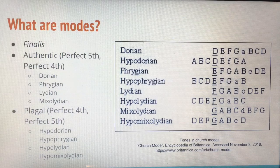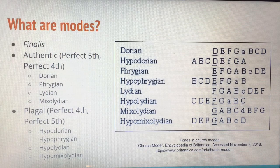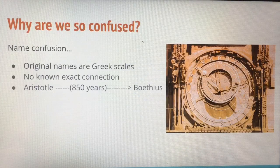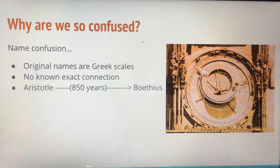The plagal modes are called the Hypodorian, Hypophrygian, Hypolydian, and Hypomixolydian. You can see the underlying note, that is the finalis note, in the diagram. So far, everything seems logical and mathematical and makes sense, so why are we so confused about modes?